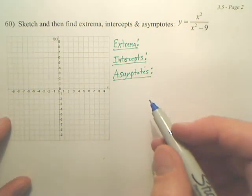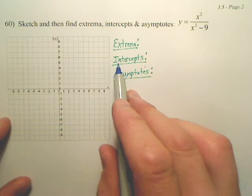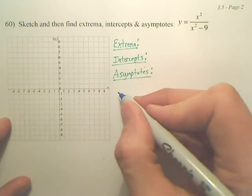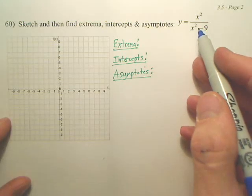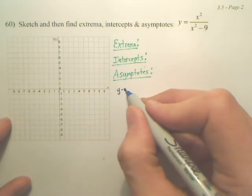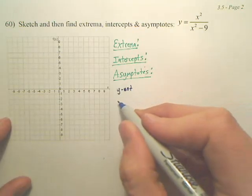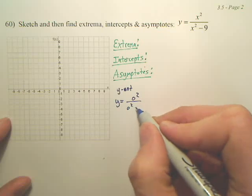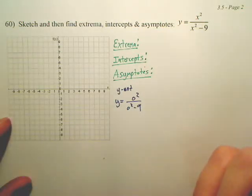All right, class, I am going to first start off with the intercepts. To find the intercepts, which one would be easier, x or y? Y-intercept is probably the easiest, because for y-intercept, all we do is plug 0 for x. So what do you get?